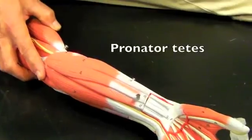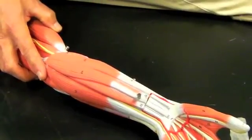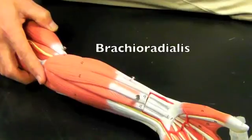Continuing laterally, you have the small muscle pronator teres, which pronates or turns the hand down, and then brachioradialis.